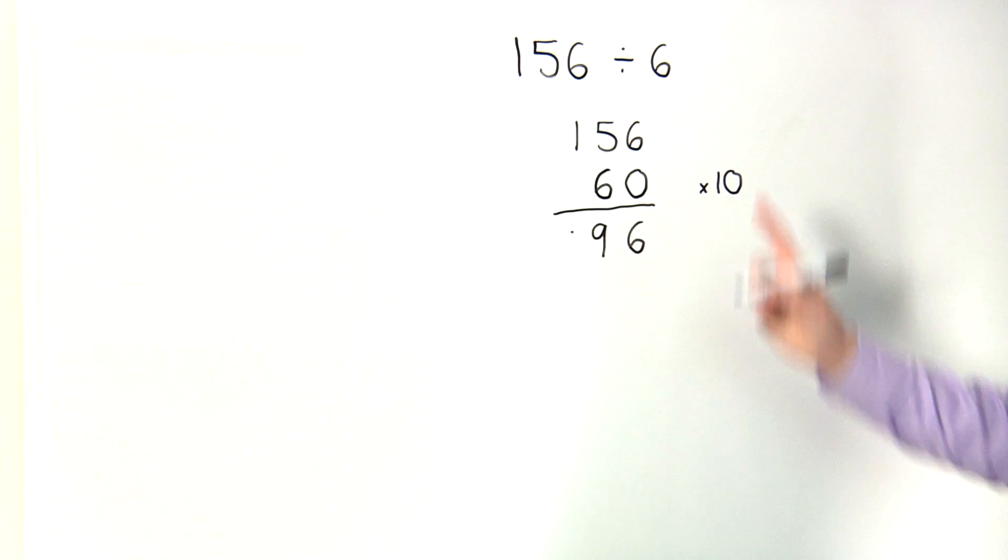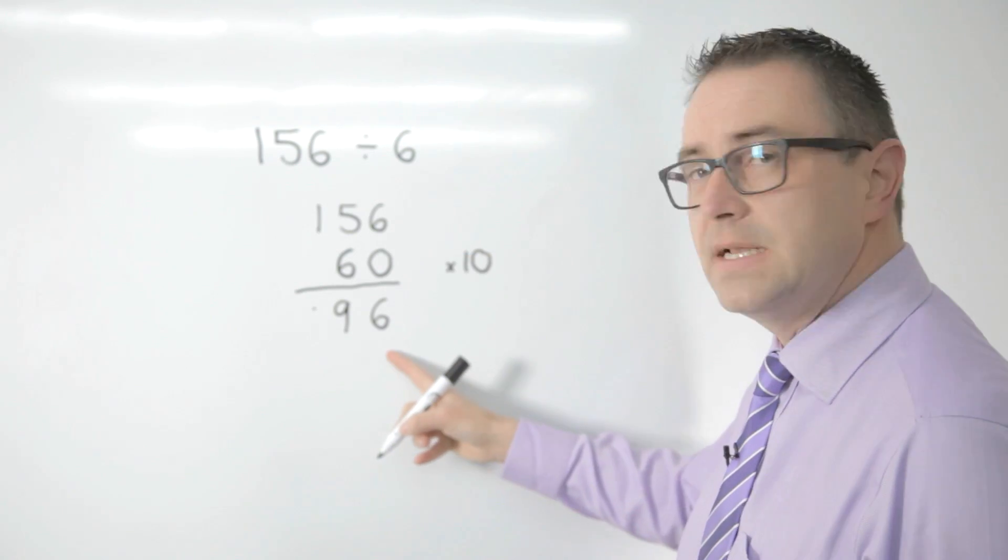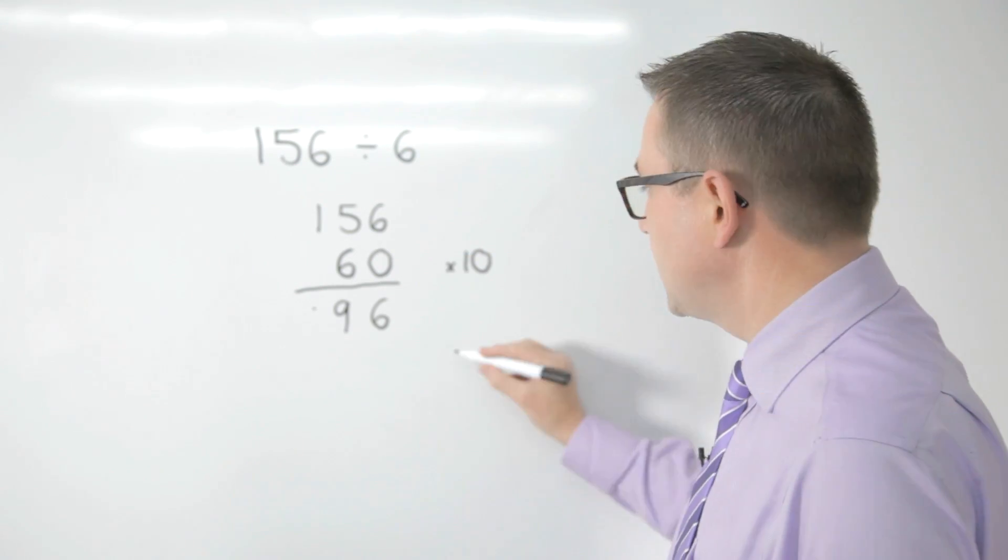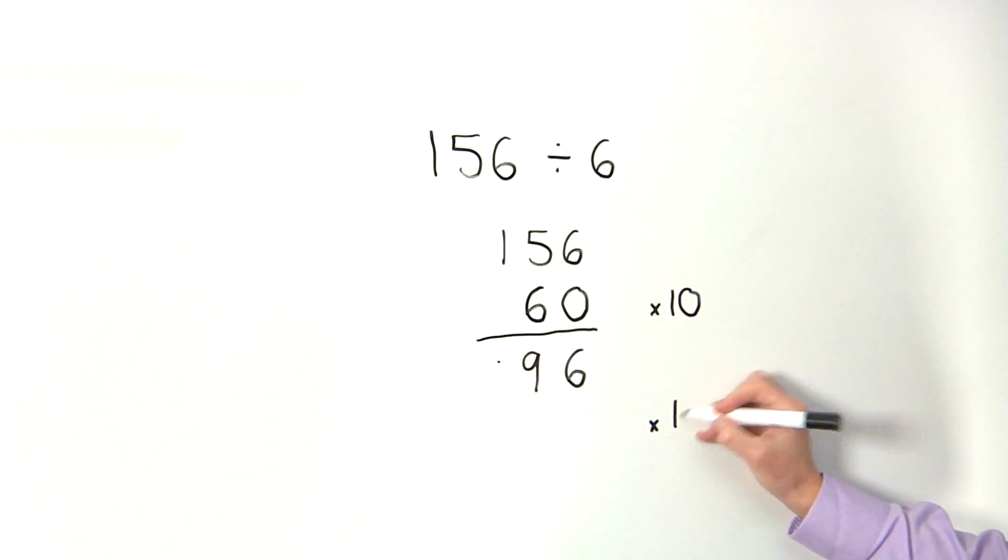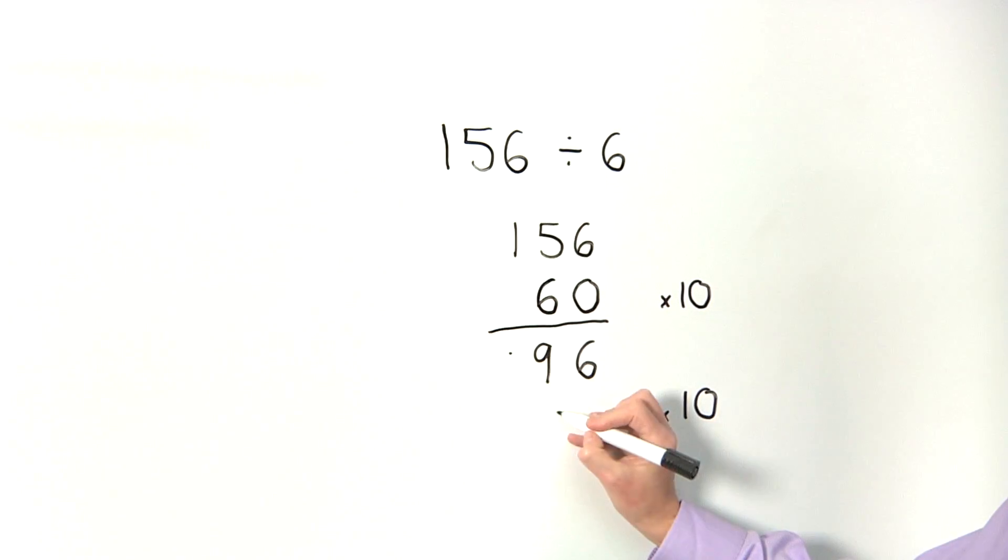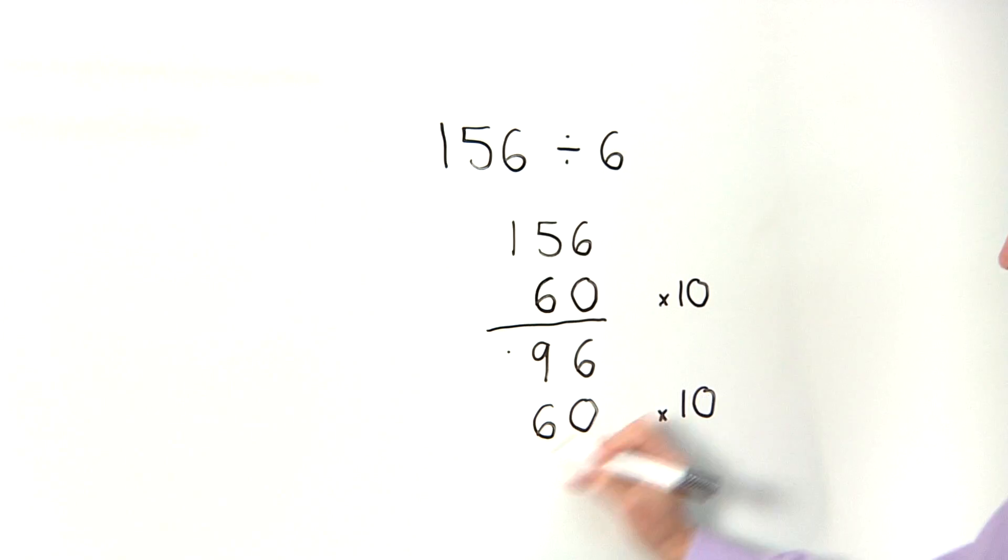I can see that I can fit in another 10 lots of 6 here, so I'm going to repeat that process again. 10 lots of, 10 groups of 6 is 60, so I'm going to take that number away and I'm left with 36.